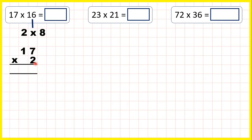So 7 times 2 is 14. So 1, 4. 1 times 2 is 2. Plus 1 is 3. So now we can take that 34 and multiply it by the other number in our factor pair.